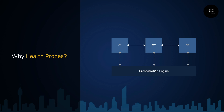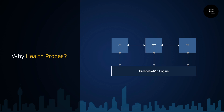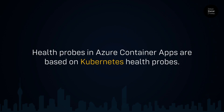For example, with this it can avoid directing traffic unless the container is healthy, or it can restart the container if it does not behave in the expected way. If the container is not working, the orchestration engine will know about this through the health probes and it will restart the container to bring it back to its normal functional state — and this is why we need health probes. If you are already familiar with Kubernetes health probes, this is not something new to you, because the health probes in Azure Container Apps are built on Kubernetes health probes.